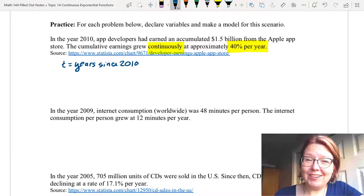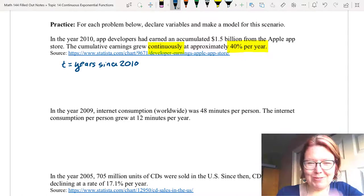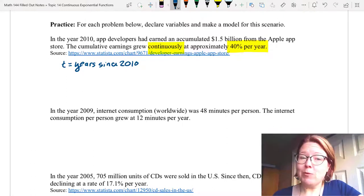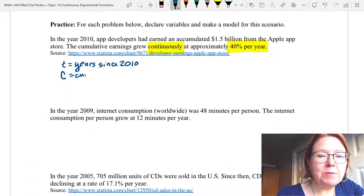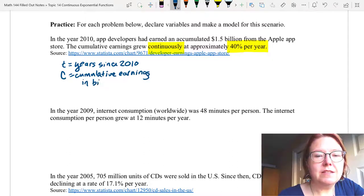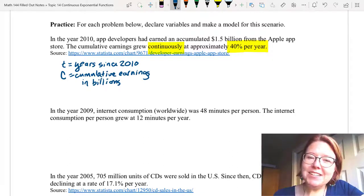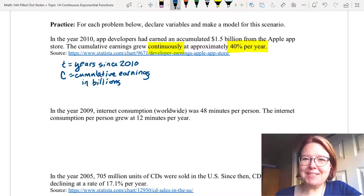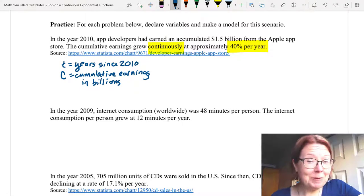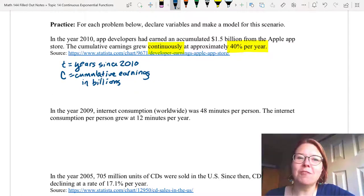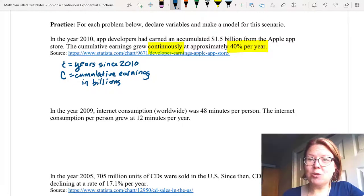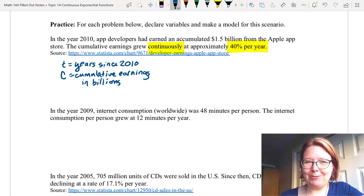So we have to declare 2010 as year zero. T is years since 2010. Now what you choose for your other variable may be different. I'm going to use a capital C for cumulative earnings, and this is in billions. I did not use E for this variable, and that's because the letter E is the base of a continuous exponential function. If you forget to capitalize it, you can run into a lot of problems. So in general, I avoid using E or capital E as variable declarations.